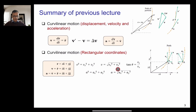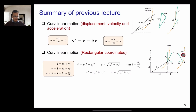If you know the components VX and VY, you can calculate V using the Pythagorean theorem. You can also calculate the angle between V and the horizontal using tangent theta equals VY divided by VX. Similarly, in the case of acceleration, AX² plus AY² equals A², from which you can calculate the magnitude of the acceleration.